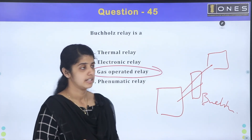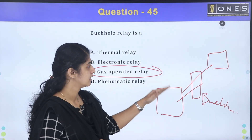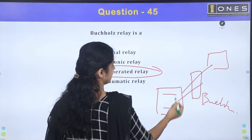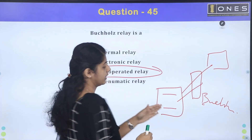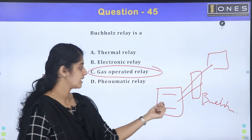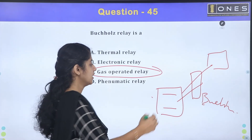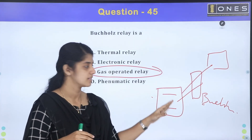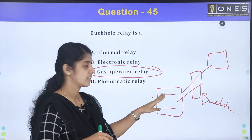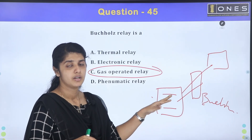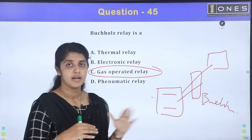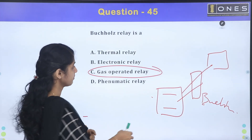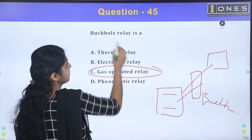The Buchholz relay is activated under fault conditions and uses a gas-actuated mechanism. It operates in two stages — first a warning alarm, then a trip signal — making it a gas operated relay.